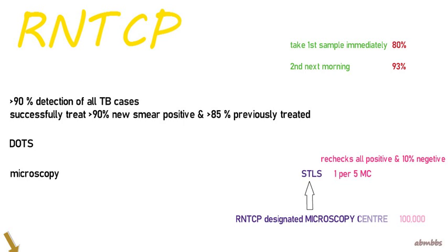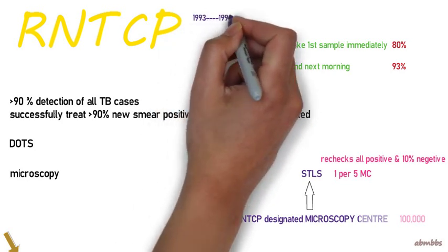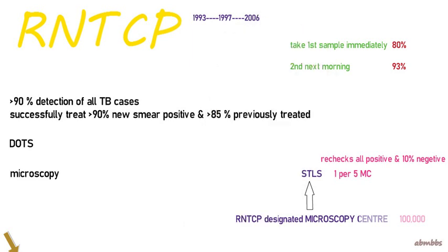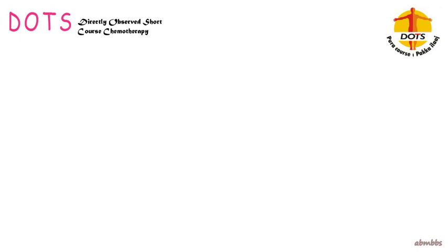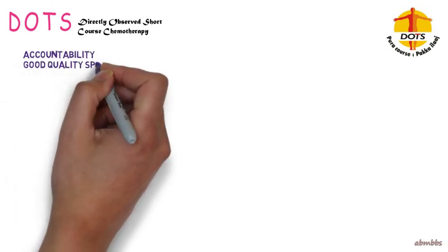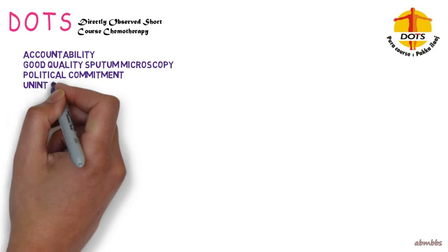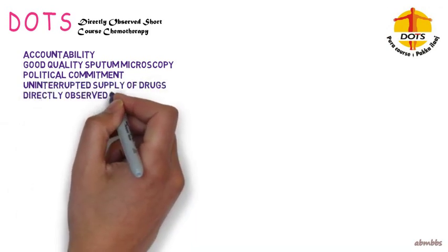RNTCP, based on the DOT strategy, began as a pilot project in 1993 and was launched as a national program in 1997. By 2006, the entire country was under DOTS. DOTS stands for Directly Observed Short-Course Treatment. It is called 'directly observed' because in the intensive phase, patients are made to take pills under direct observation of the authorities. It is called 'short course' because the current regimen is a much shorter version of the earlier regimen. The five components of DOTS are: accountability, good quality sputum microscopy, political commitment, uninterrupted supply of good quality drugs, and directly observed treatment.